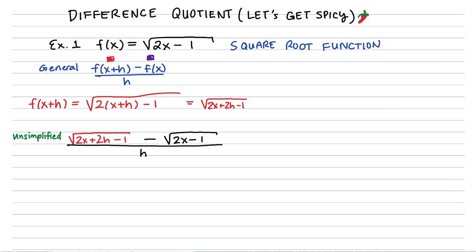This is the unsimplified version. Now to simplify, we want to cancel an h, but with all these square roots in the numerator, we certainly can't do that. So the only way to simplify a square root is that we have to multiply by the conjugate.